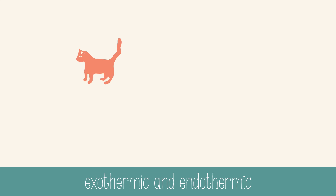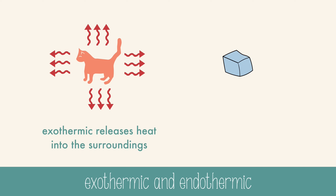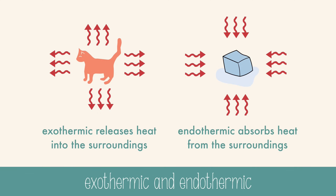The examples with the cat and the ice cube are great examples of exothermic and endothermic processes. The cat releases heat into the surroundings, so this is exothermic, which literally translates to 'out heat.' The ice cube, however, absorbs heat from the surroundings, so this is endothermic, which means 'in heat.'